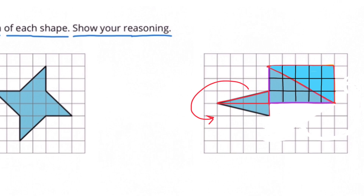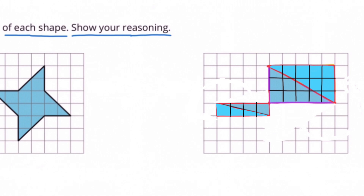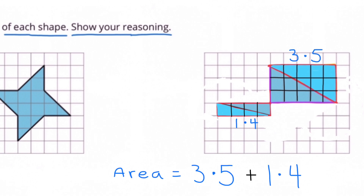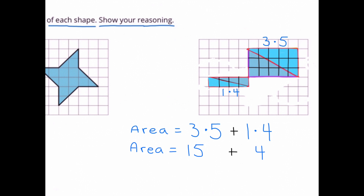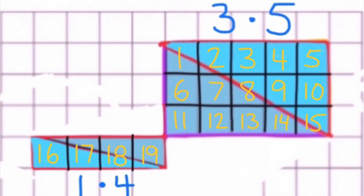For the second shape, decompose the shape into 2 smaller shapes. The areas of the 2 shapes are 3 by 5 and 1 by 4. 3 times 5 is 15, and 1 times 4 is 4. 15 plus 4 is 19, so the combined area of the original shape is 19 square units — 15 square units in the larger shape and 4 square units in the smaller shape.